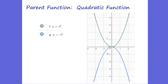We have some parent functions here of our quadratic function. You can see the green function is y equals x squared. It's a positive value, so it's a positive parabola — it will always be concave up. And when we have y equals negative x squared, you can see it's the reflection upon the x-axis, so it will be a concave down function.